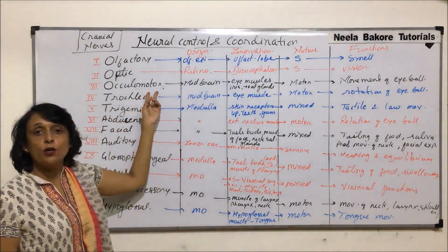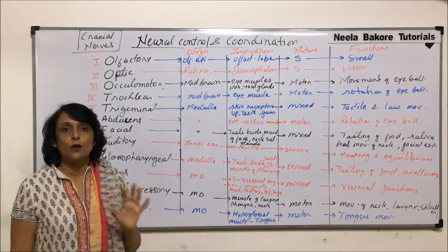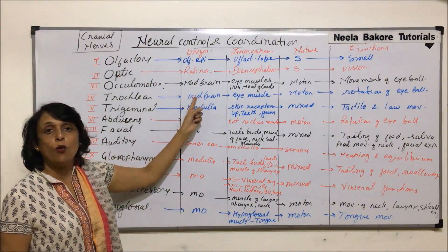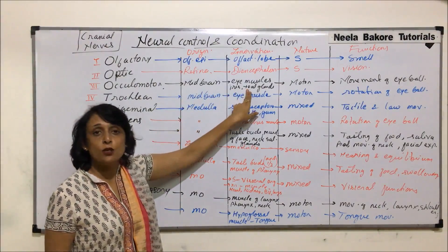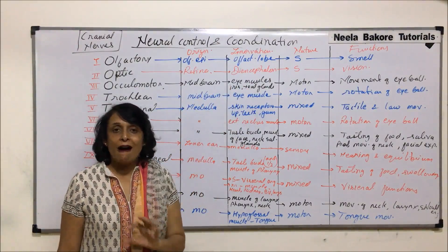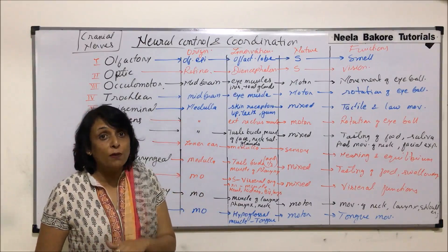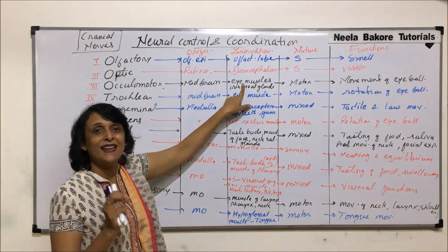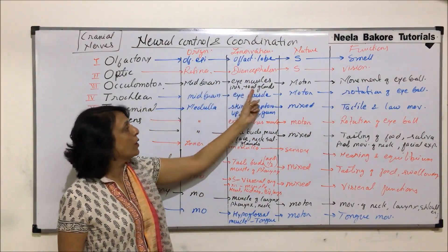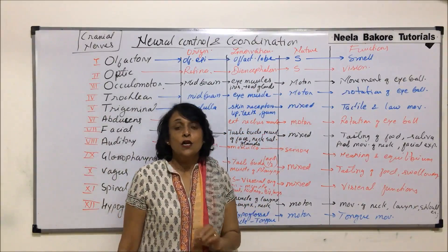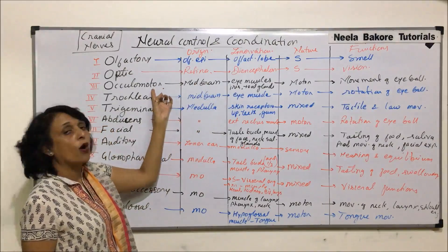Oculomotor arises from the midbrain. Out of 12 cranial nerves, only two arise from the midbrain — that is the third and fourth. The oculomotor arises from the cerebral peduncle part of the midbrain and supplies to the eye muscles — superior rectus, inferior rectus, and internal and external rectus muscles. It is a motor nerve and its function is movement of the eyeball, especially up, down, and sideways movements.